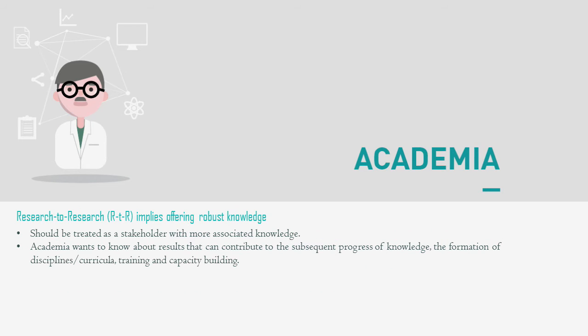Academia is probably the easiest target group, because you are communicating to your peers. What is implied here is offering robust knowledge. They want to know about your project's results and what progress can be made on that knowledge — what they can use, improve, or work on together with you for creating curricula, training, or capacity building in general. We divided this stakeholder group into universities in general and research institutes.